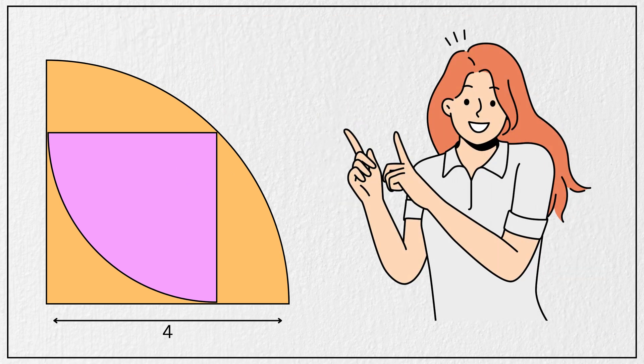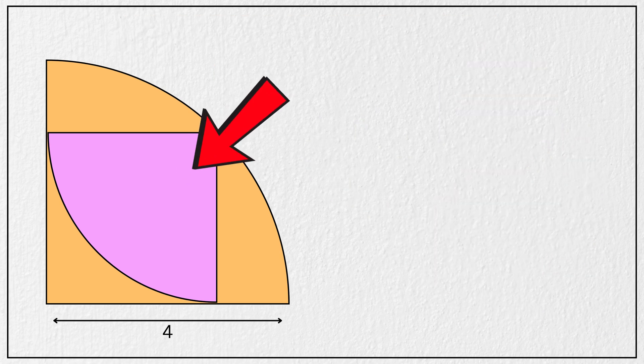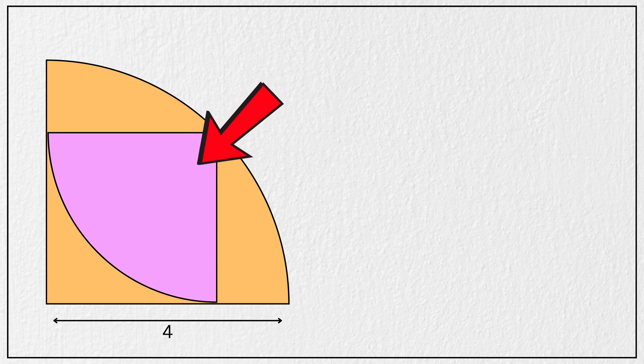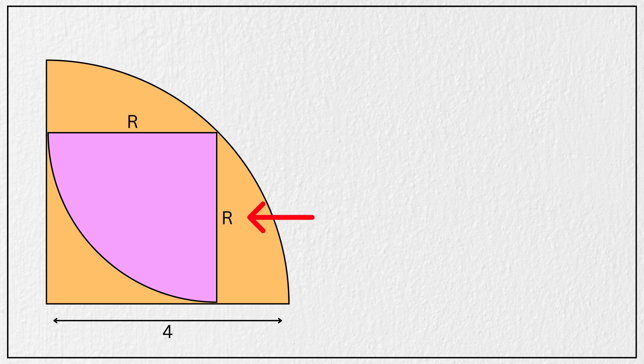Alright, let us get started. But before we begin, let us define the radius of this pink quarter circle as R units. That means this is R units, and this is also R units.